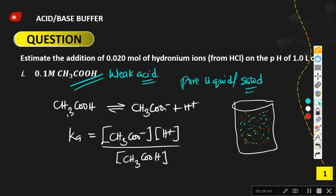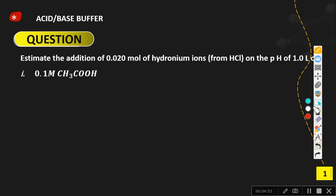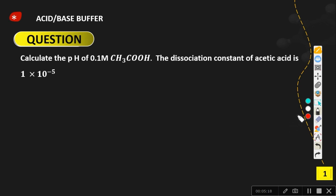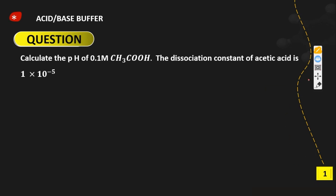The equilibrium constant is the ratio of the concentration of the products over the concentration of the reactants. Now let's solve this question: calculate the pH of 0.1 molar acetic acid. The dissociation constant of acetic acid is given as 1.8 times 10 raised to the power of minus 5. That is the Ka for acetic acid.